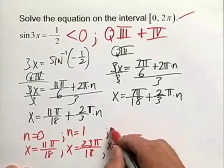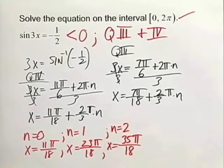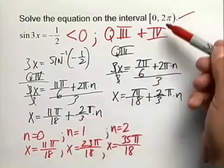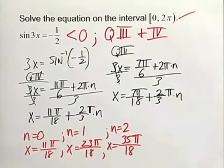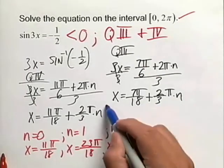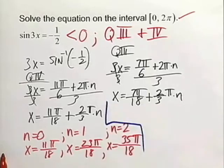Now, part of the reason that we don't go any further than this is if we plug in n equals 3, that will move our solution outside of our interval. In a similar fashion, we're going to focus on the second set of equations, second equation rather, and find those values for when n is equal to 0, 1, and 2.